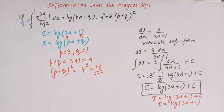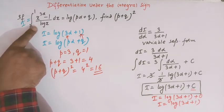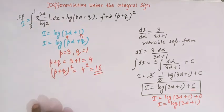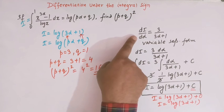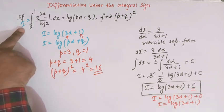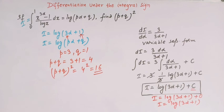Viewers, this is how we solve this problem. We have seen the importance and significance of differentiation under the integral sign. By applying Leibniz's rule, we obtained a differential equation, and solving it with the initial condition allowed us to find the value of the integral and ultimately determine the answer.